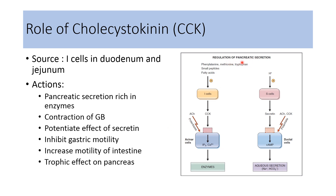Here we can see the summary of the regulation of pancreatic juice secretion. Products of protein digestion stimulate I cells inside the duodenum, increasing release of cholecystokinin. Cholecystokinin acts on acinar cells of the pancreas and through the IP3/DAG pathway increases serum calcium, increasing release of pancreatic juice rich in enzymes; this action is potentiated by acetylcholine and secretin. Acid present in the duodenum stimulates S cells, which release secretin. Secretin acts on ductal cells and through increased cyclic AMP increases release of aqueous pancreatic juice containing more sodium and bicarbonate; this action is potentiated by acetylcholine and cholecystokinin.